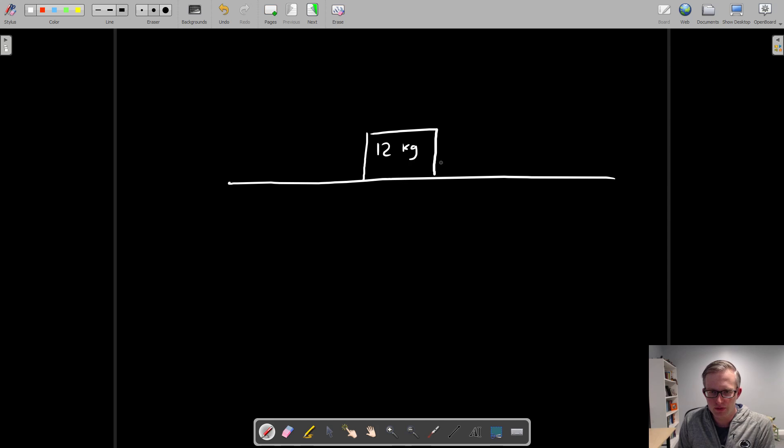Right away we know a couple things about this box. It's experiencing a downward force of gravity equal to 12 times 9.8, and an upward normal force which is equal to the force of gravity because it's a horizontal surface and the floor is supporting it. That's about 118 newtons. Let's add that in here - 118 newtons.